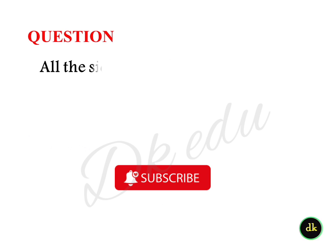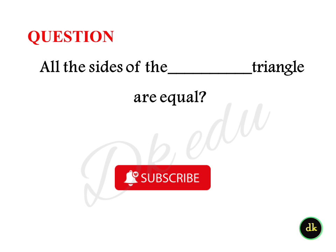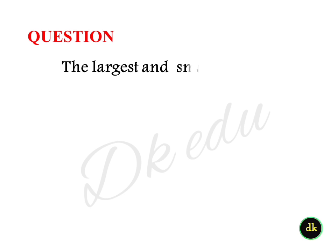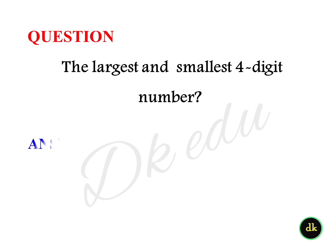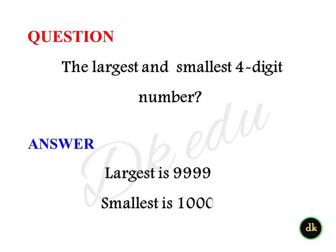All the sides of a dash triangle are equal. Answer: Equilateral. What are the largest and smallest four-digit numbers? Answer: Largest is 9999 and smallest is 1000.